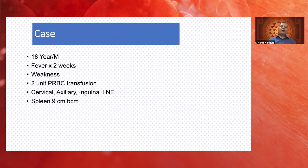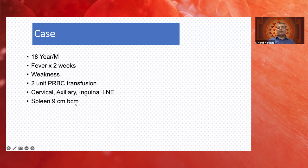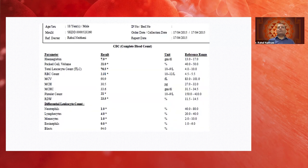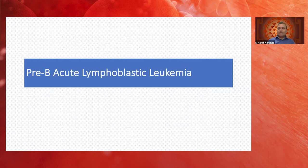Case 2: An 18-year-old male with a short febrile illness of two weeks, weakness, two units of blood transfusions, generalized lymph node enlargement (cervical, axillary, inguinal), and spleen palpable 9 cm below the costal margin. CBC showed low hemoglobin, very high TLC, and very low platelets, with 94% blasts on the differential — a diagnosis of pre-B acute lymphoblastic leukemia.